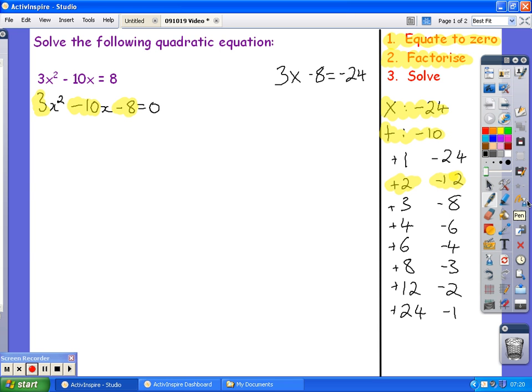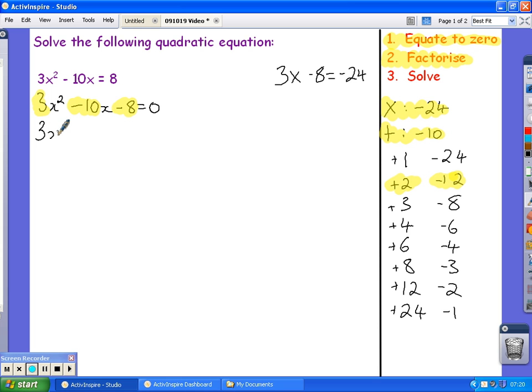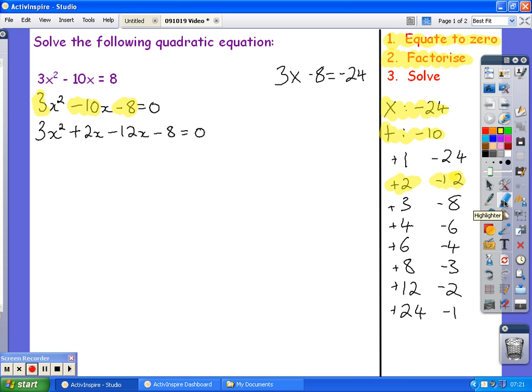So, now I need to split up my negative 10x into those two numbers. Here we go. I've made it plus 2x and subtract 12x. I could have, if I wanted to, made it subtract 12x first and then add 2x. It doesn't really matter which way around I do it.